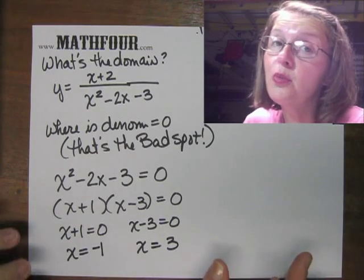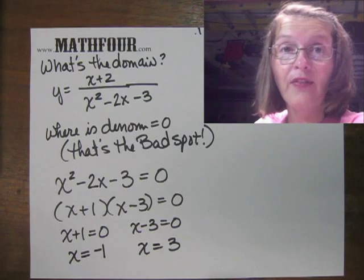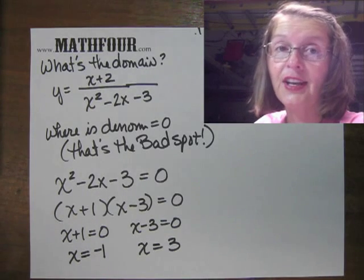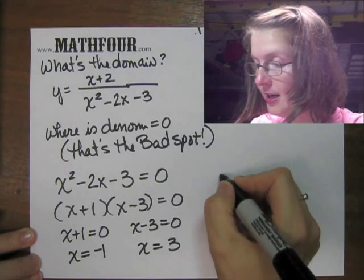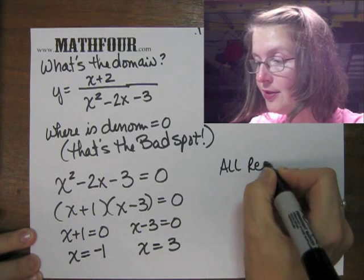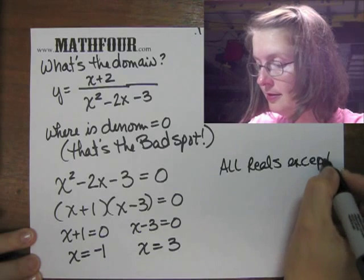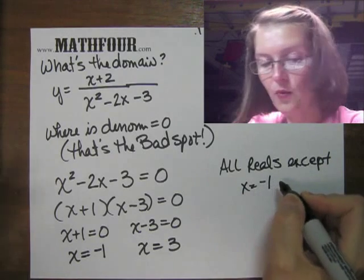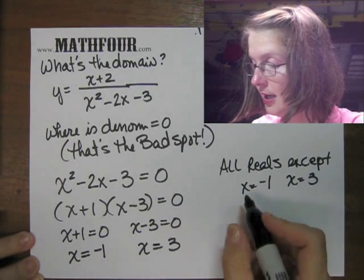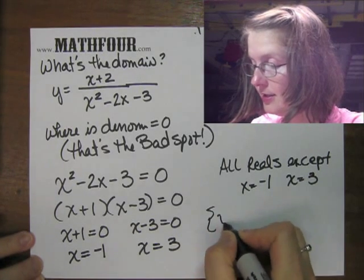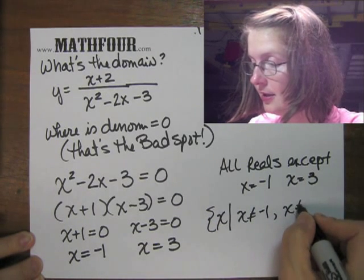So we have x is -1 and x is 3. Again, this is not a solution to a problem. What this is, is it tells you where the bad places are, where to stay away from, where the function is not valid or undefined as we would say. So we can say all reals except x = -1 and x = 3. We could also say the set of all x such that x is not equal to -1 and x is not equal to 3.